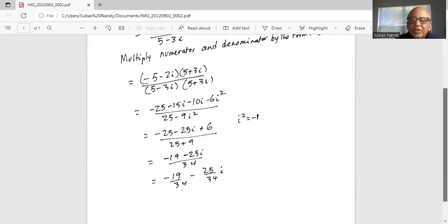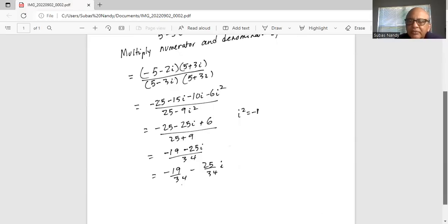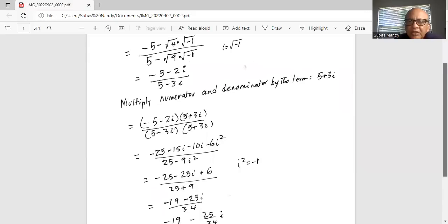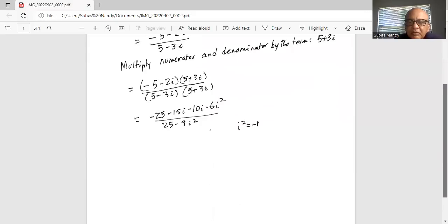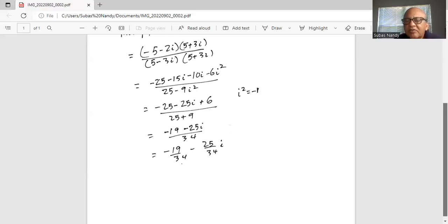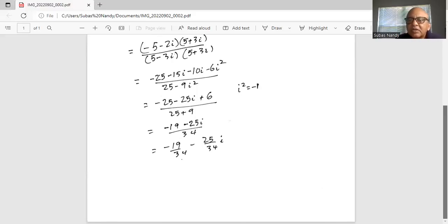Now you separate the real part and the imaginary part by dividing each term in the numerator by 34, which is the term in the denominator. So the first term becomes minus 19 over 34, and then minus 25 over 34 times i, which is the coefficient of the imaginary part. This is the same form as a plus bi that we were looking for. Here, a is minus 19 over 34, B is minus 25 over 34.